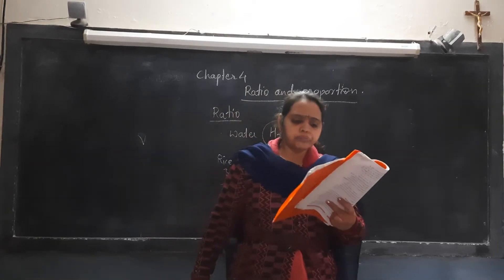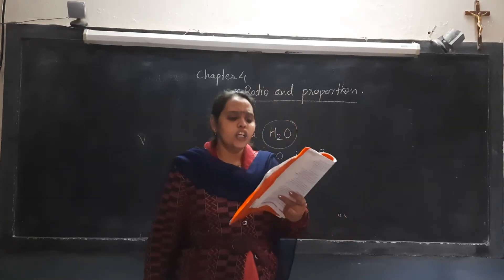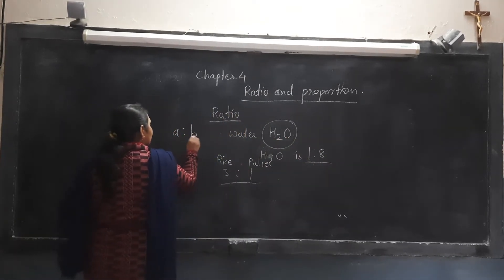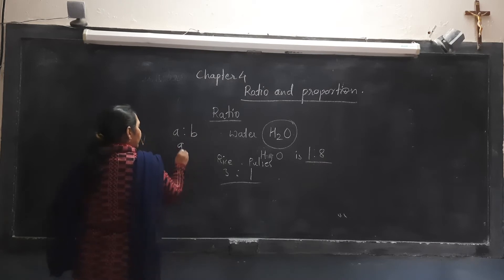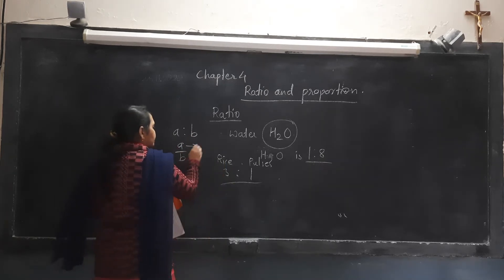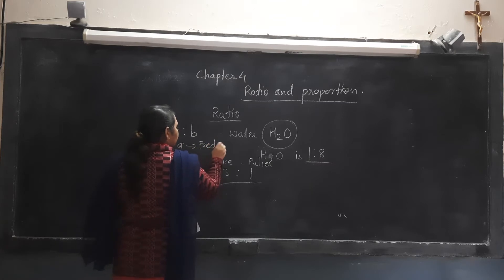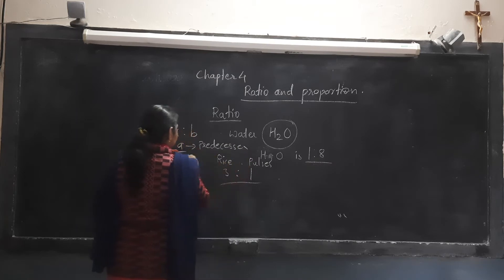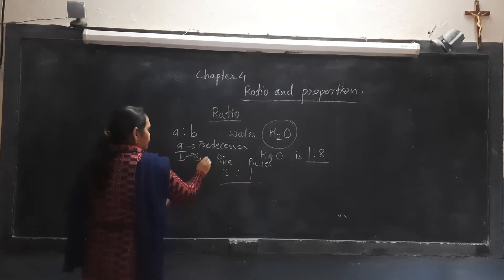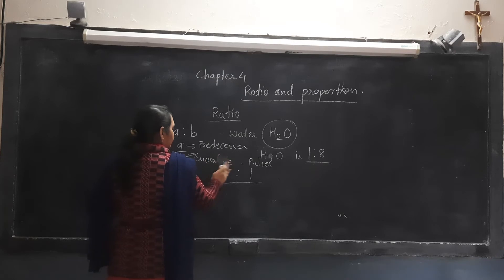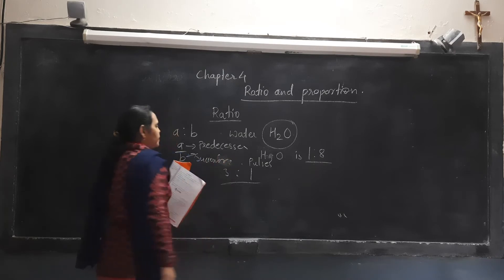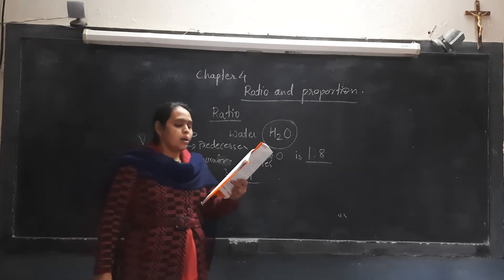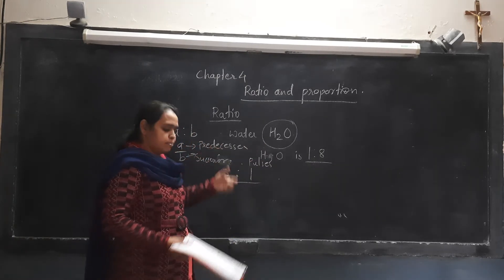Now in the properties of ratio, you can see page number 59. Some properties are given. The ratio of numbers A and B, we write as A is to B, or A double dot B, or A upon B. Here A is the predecessor and B is the successor. The first term is the predecessor and the second term is the successor.